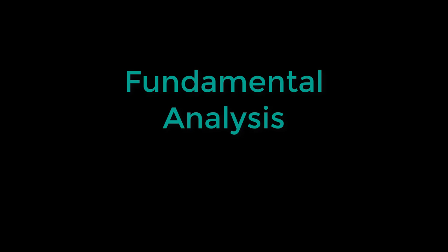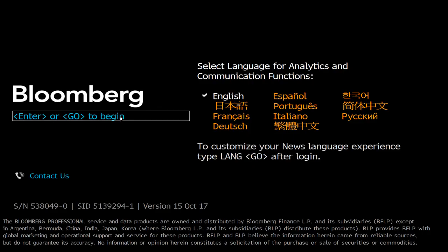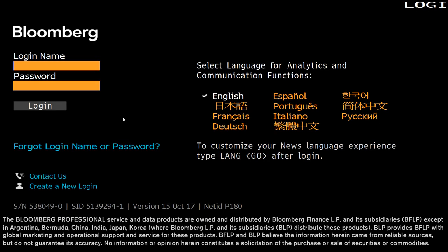This is a short video on using Bloomberg to locate the financial data needed to perform fundamental analysis. The end goal of fundamental analysis is to produce a quantitative valuation that an investor can compare to the current price. This will then be used to decide if a security is under or overpriced.